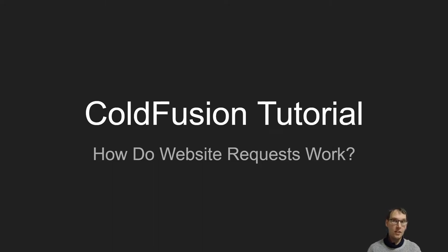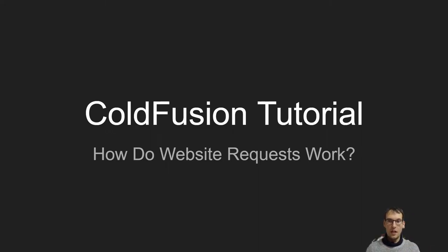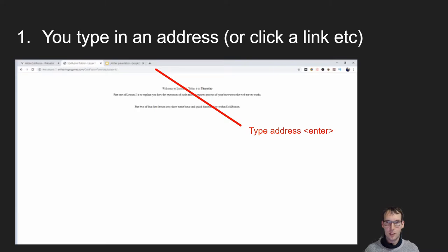ColdFusion tutorial — how do website requests actually work? Whenever you type in an address in your browser and press enter, or on your phone if you type in a search and click on a link in Google, something happens. You type an address or click a link — for example a Facebook page — and I'll show you now what happens. You type an address in the bar at the top, or you have a link to a Facebook profile you want to check out.